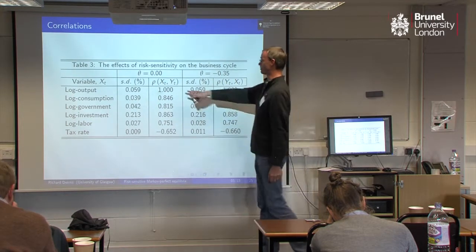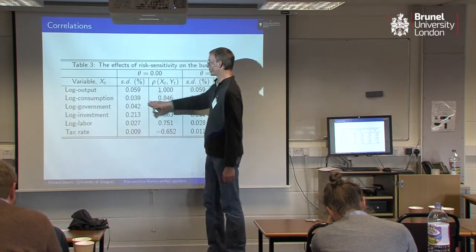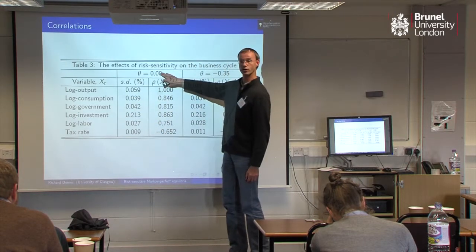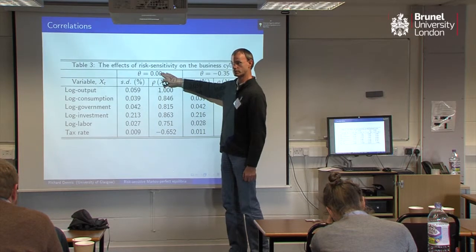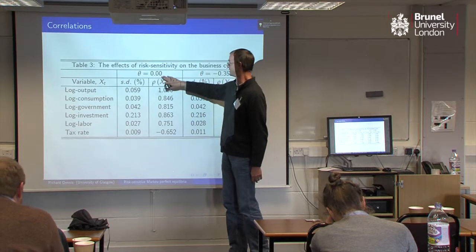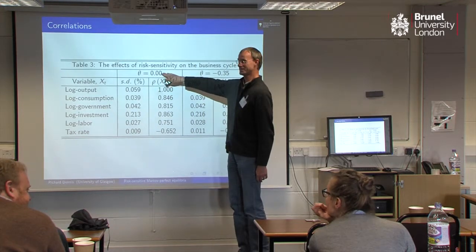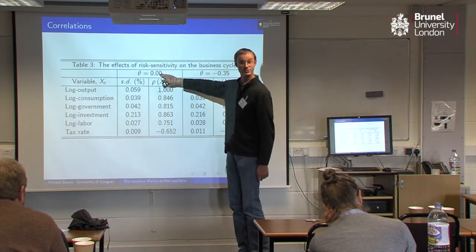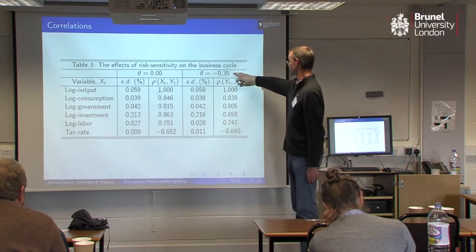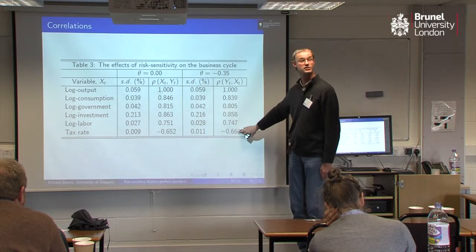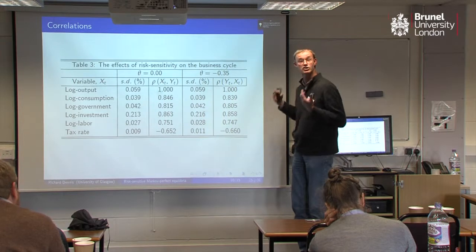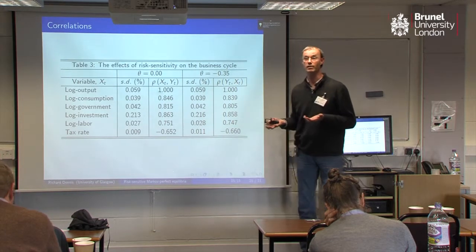So if you look at the correlations from the model — these are correlations with output of various variables — here they are for the case with no risk sensitivity, and here for the case with risk sensitivity. There isn't much of a change here. So the risk sensitivity is not really affecting the business cycle that much.